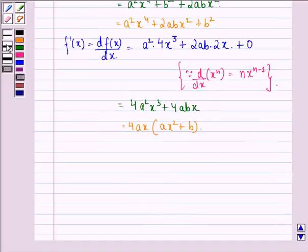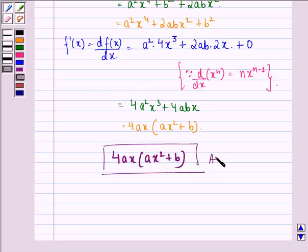So our answer to the question is 4ax(ax² + b). I hope that you understood the question and enjoyed the session. Have a good day.